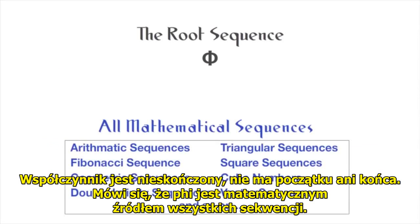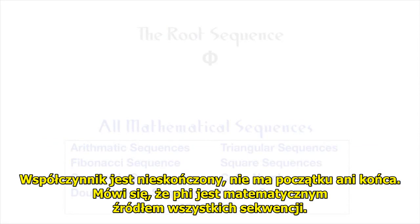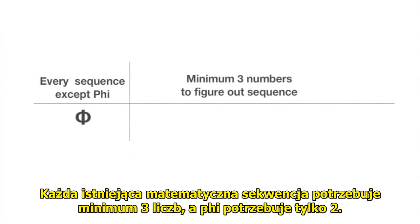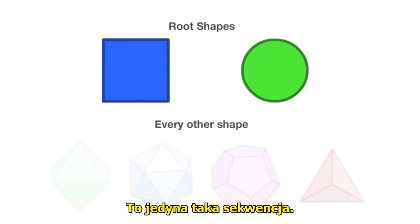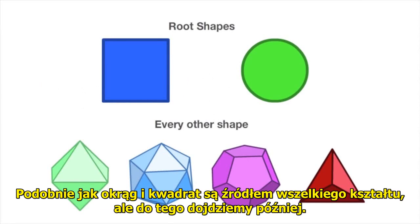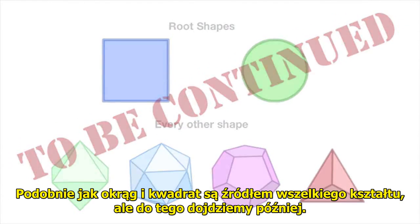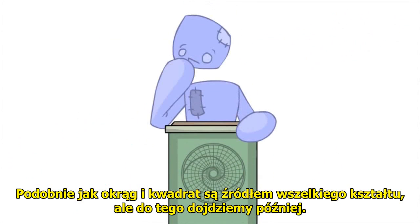It has no beginning and no end. It is also believed that Phi is the mathematical root of all other sequences. Every mathematical sequence in existence needs a minimum of three numbers to figure out the sequence — Phi only needs two. It is the only one. Similar to how the circle and square are the source of all shape, but we'll get to that later on.